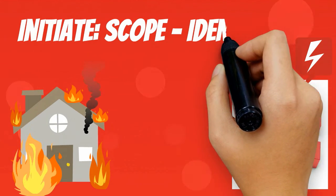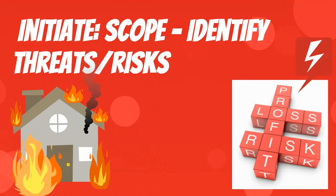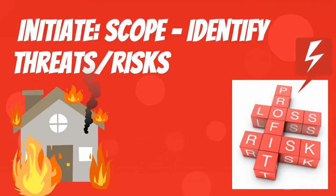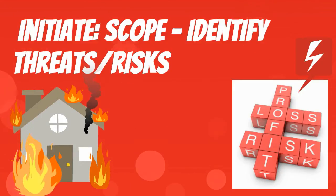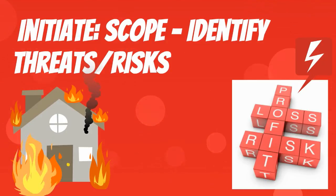There are four stages in IT service continuity management. Stage 1: Initiation. Initiation talks about identifying threats and risks so a policy can be defined and communicated.